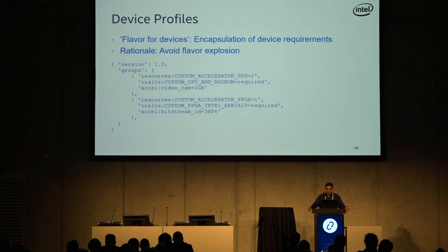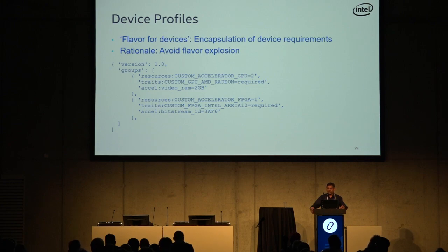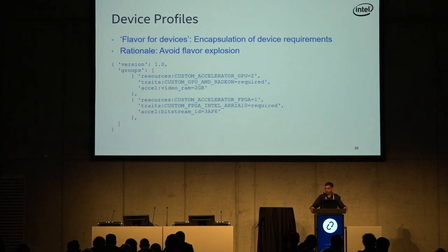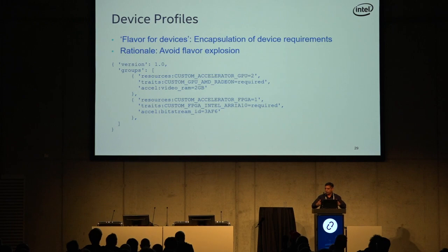Here's another new concept. We're familiar with flavors as templates for what resources and VM type you want. But if you put all your device requirements in a flavor, there could be a problem — you may want various combinations of devices, GPUs of different types, FPGAs of different types, different quantities per workload. You may wind up having one flavor for every combination, which causes a flavor explosion. To solve that, we factored out the device requirements into a separate thing called a device profile. It's basically just a flavor for devices — very similar to flavors, but splitting the device spec out so it can be composed together with the flavor at runtime.